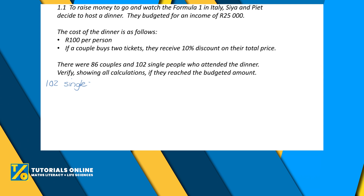First of all, you've got 102 single people. Their tickets were 100 rand each, so the total income from those ticket sales was 100 rand times 102, and you get a total of 10,200 rand.